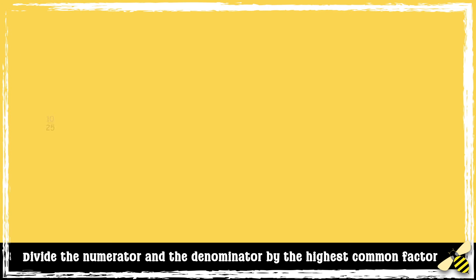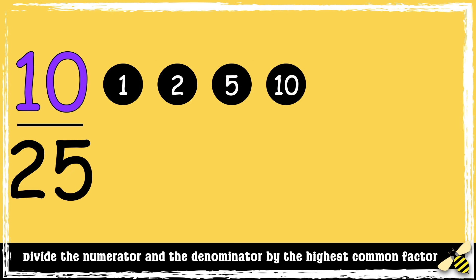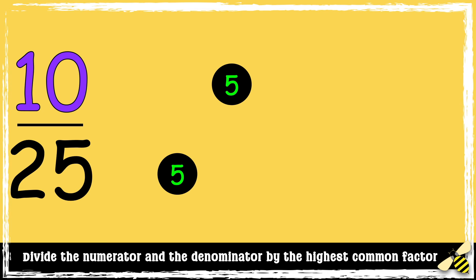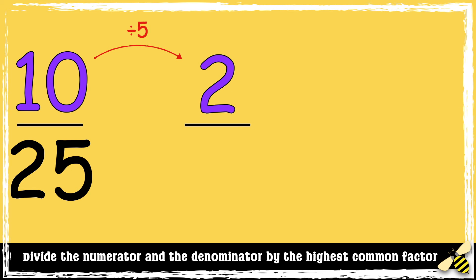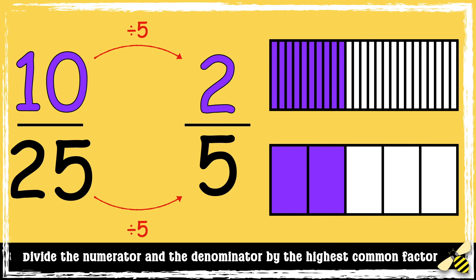Here's one more example: 10 25ths. First, we need to find the highest common factor. Here are the factors of 10 and the factors of 25. 5 is the highest common factor, so now we can divide the numerator and the denominator by 5. 10 divided by 5 is 2, and 25 divided by 5 is 5. So 10 25ths in its simplest form is 2 5ths.